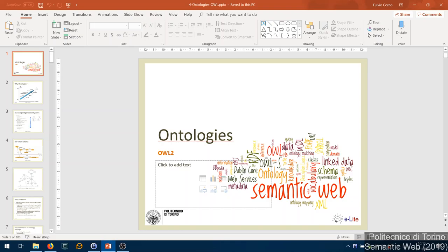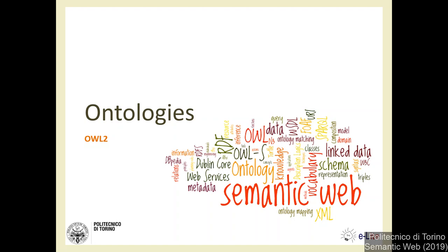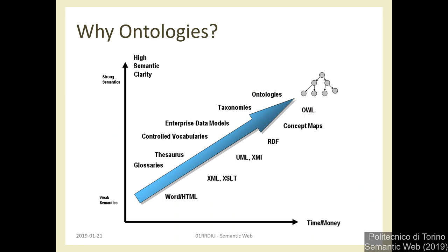One of the words most associated with the semantic web is 'ontology.' A lot of people think that the semantic web and ontology are the same concept. Actually, what we try to show is that even with simple RDF we can already do a lot. The linked data universe and querying doesn't require higher levels of formality or logic like those brought by OWL. Nevertheless, if we need to move to stronger semantics, we need something more.